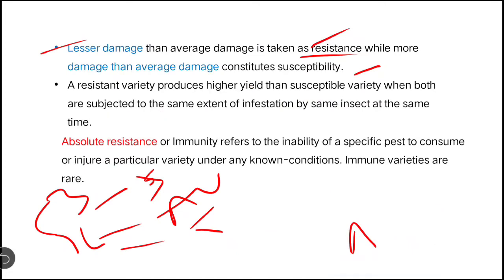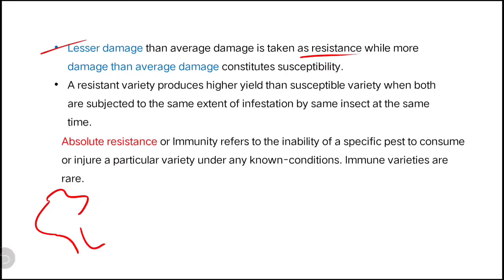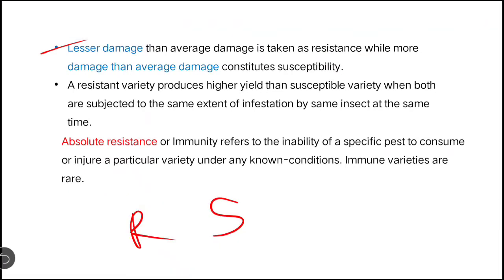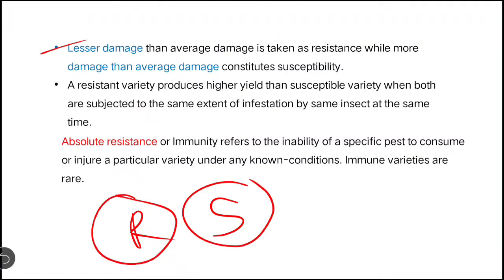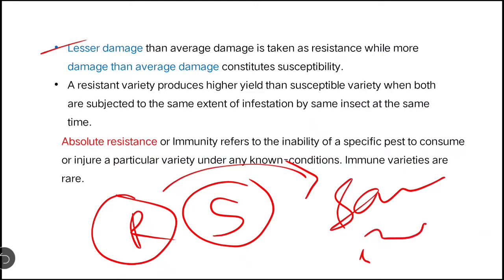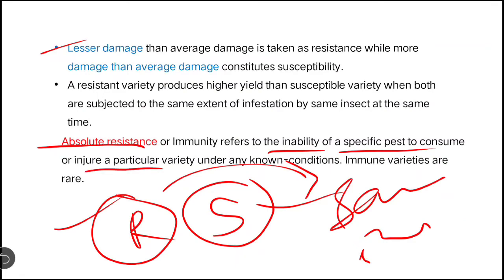Suppose there are two plants — one resistant and one susceptible. When you expose both plants to the same environment and the same type of insect infestation, then you can determine which plant is resistant and which is susceptible. Next, the definition of absolute resistance: it refers to the inability of a specific pest to consume or damage a particular variety under any known condition. Immune varieties are rare.